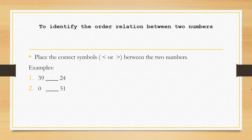Let's answer this. Number one, 39 is greater than 24. And number two, 0 is less than 51.